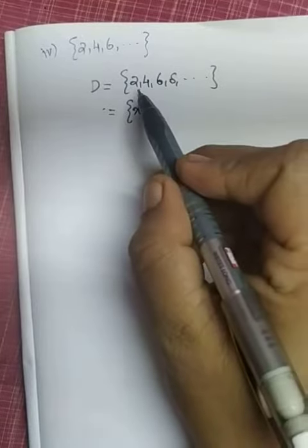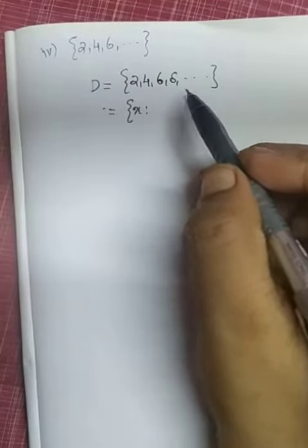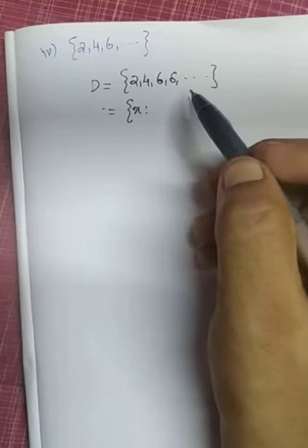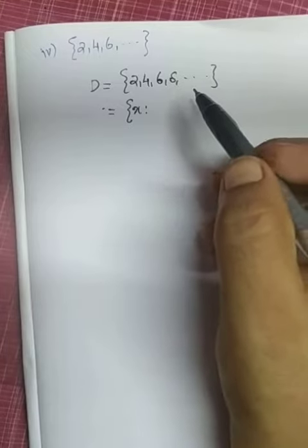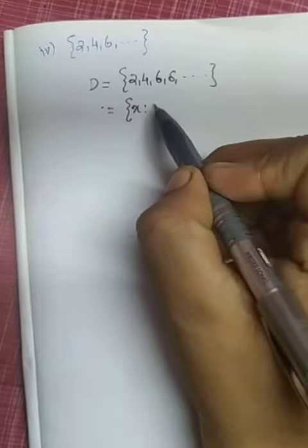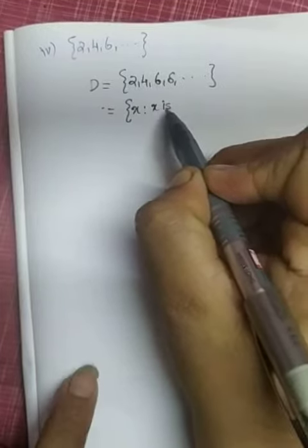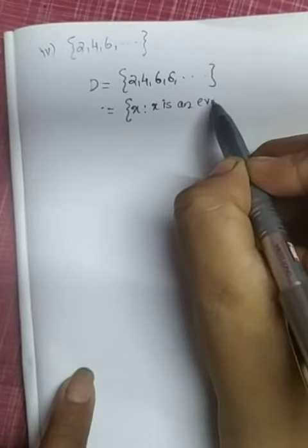2, 4, 6, 8, etc. - all numbers are natural numbers. Rather than that, all numbers are even numbers, isn't it? So we have the condition: x is an even natural number.